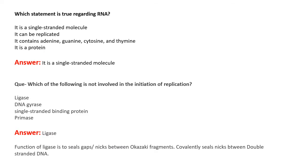The next question asks which statement is true regarding RNA. The options are: RNA is a single-stranded molecule; RNA can be replicated; RNA contains thymine; RNA is a protein. The correct option is that RNA is a single-stranded molecule. RNA cannot be replicated; RNA contains uracil instead of thymine; and RNA is used to synthesize proteins, not a protein itself.